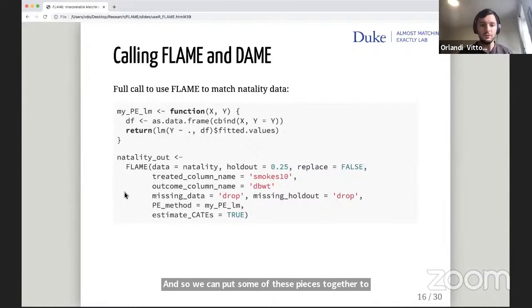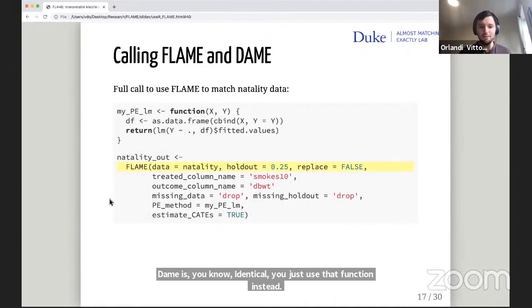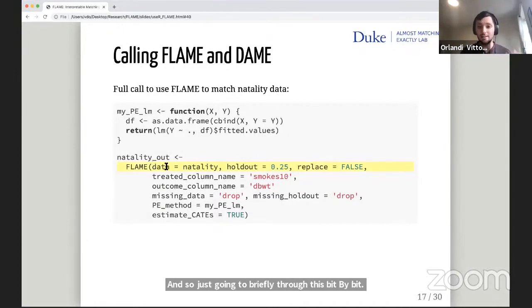So we can put some of these pieces together to show a full call to Flame to match the natality data. Calling Dame is identical. You just use that function instead. Just going briefly through this bit by bit, in the data argument, we pass the data to be matched, which here I've already loaded into a data frame called natality. You can pass a separate holdout set to compute predictive error, or you can supply a proportion of the data from the matching data that will be taken and used to compute the error. And that's not matched. You can decide whether to match with or without replacement, specify the names of the treatment and outcome, how you want to deal with missing data if it's present, compute predictive error. And lastly, this is a flag that's telling you to estimate conditional average treatment effects or CATEs as you do the matching. So a CATE is essentially the effect of the treatment on a subset of the population, like on certain units that have certain covariate values.